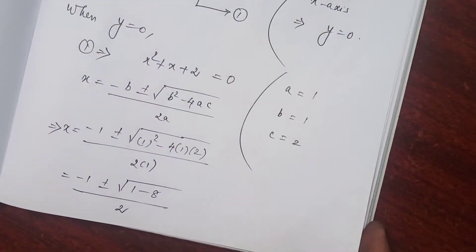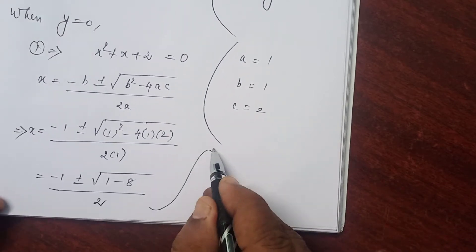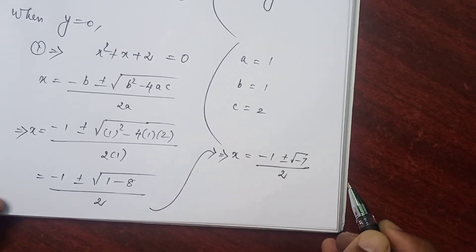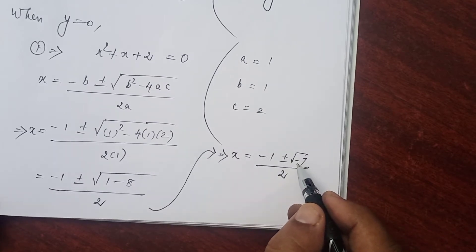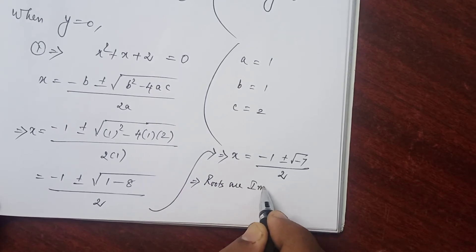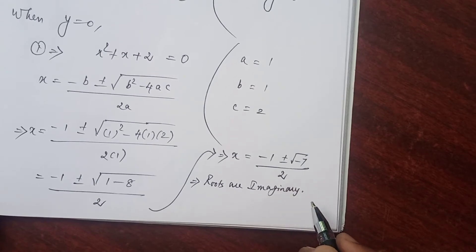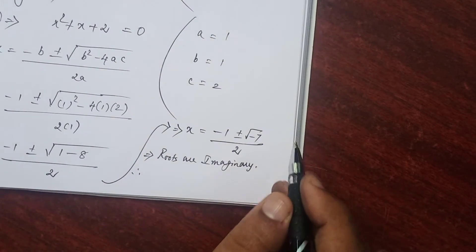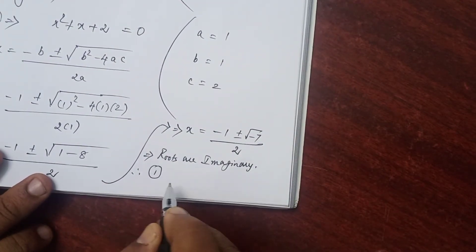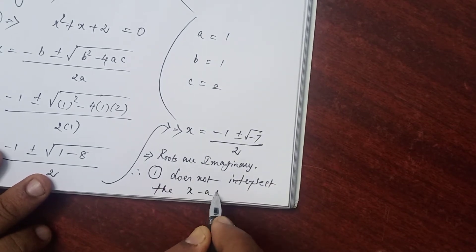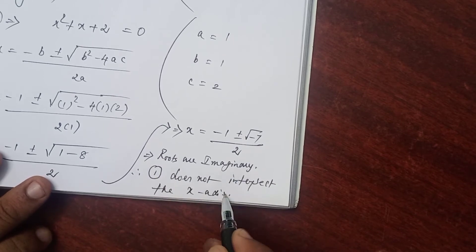So, x = (−1 ± √(−7)) / 2. Since a negative value is inside the square root, the roots are imaginary — no real roots. Therefore, the given curve does not intersect the x-axis. The roots are unreal, meaning imaginary. Subdivision number 1 is completed.